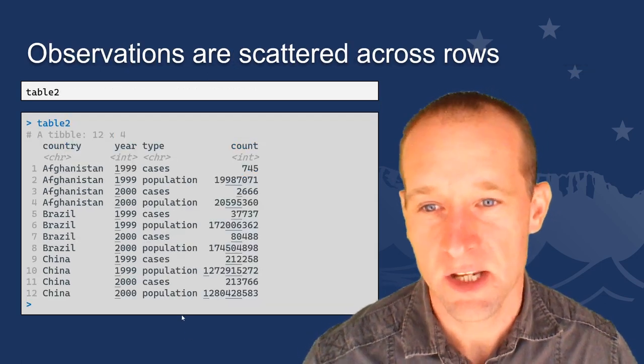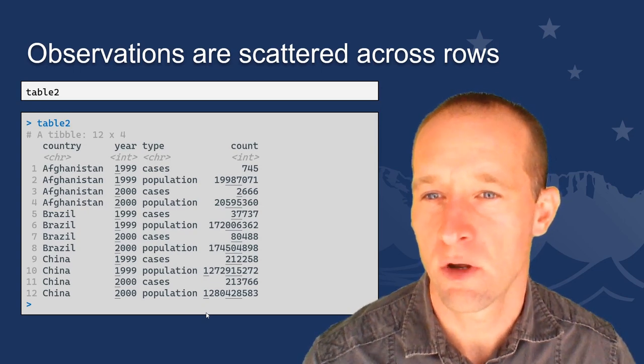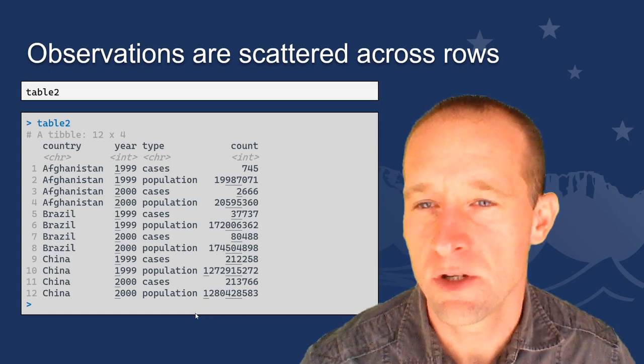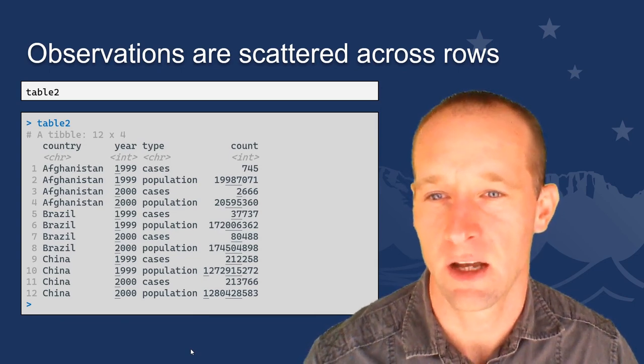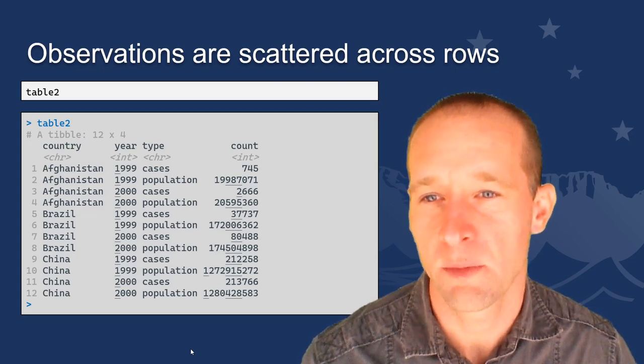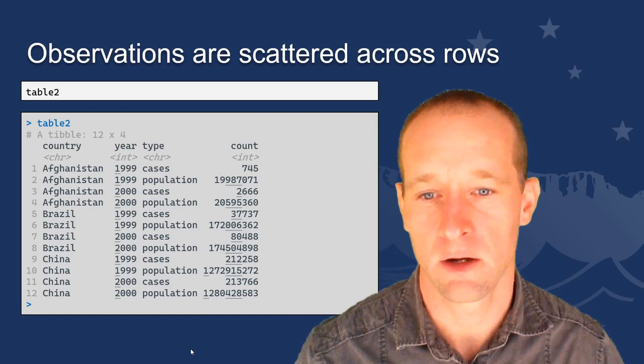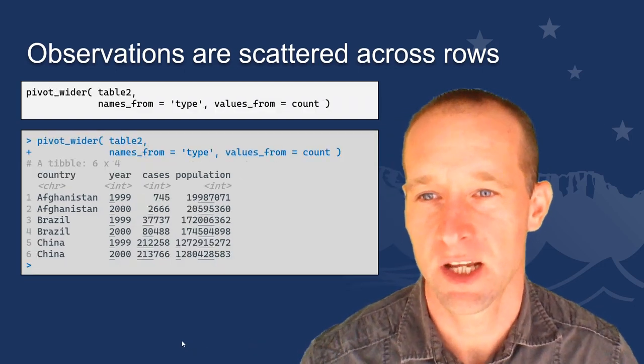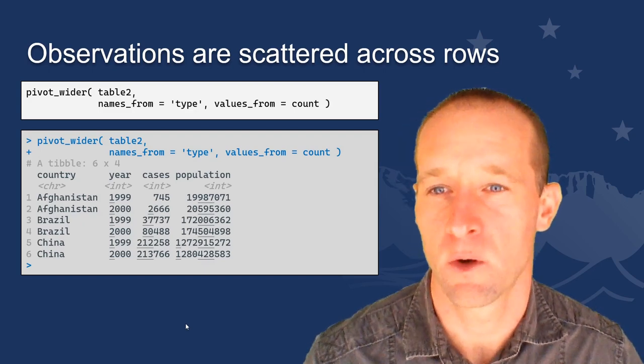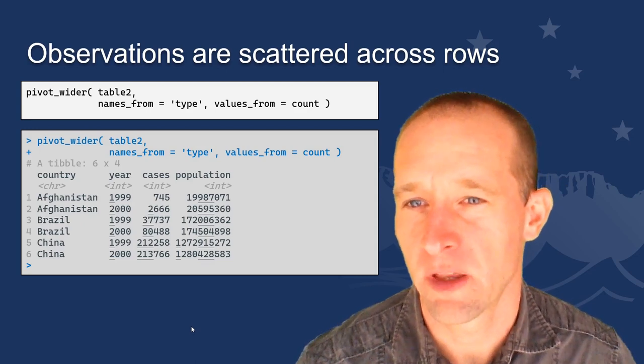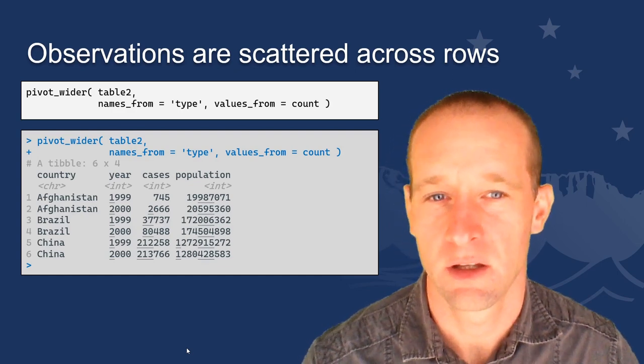What about the opposite situation? So here we have another table, table 2, also included with the tidy r package. And in this case we have observations that are spread across rows. Here you can see under the column year I have two entries for 1999, and the type of data, I've got a case, a number of cases, and a population count. So here we actually have one observation spread across two rows, and we have that for each year. So in this case we need to pivot our data wider. And we do that with the pivot wider function, which takes a tibble as its first argument, and then simply the names of the columns we're going to pivot from, and the values that we're going to take. And the output that we have here, we can see now we have one single row for each observation, and the two variables cases and population. Nice and tidy now.